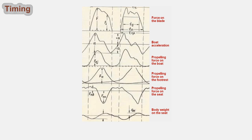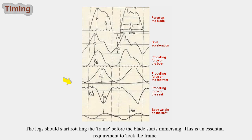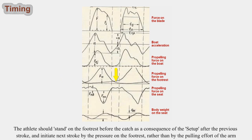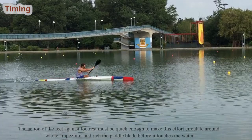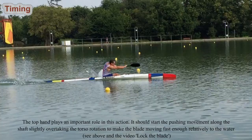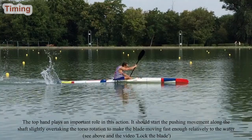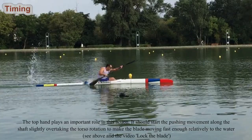The legs should start rotating the frame before the blade starts immersing — this is an essential requirement to lock the frame. The athlete should stand on the footrest before the catch as a consequence of the setup after the previous stroke, and initiate the next stroke by the pressure on the footrest rather than by the pulling effort of the arm. The action of the feet against the footrest must be quick enough to make this effort circulate around the whole trapezium and reach the paddle blade before it touches the water. If there is weakness in the frame, the power generated at the footrest will be lost.